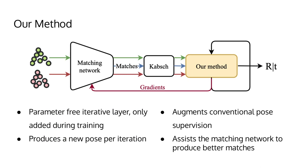We propose a new differentiable and parameter-free layer to be added in front of a correspondence-based registration host network. Our layer is only added during training. This layer works in an iterative fashion, producing a new pose per iteration. These additional new poses will augment the conventional pose supervision with extra terms. This process produces different gradients compared to the baseline host network that are beneficial to the matching stage, implicitly helping it to produce better matches.